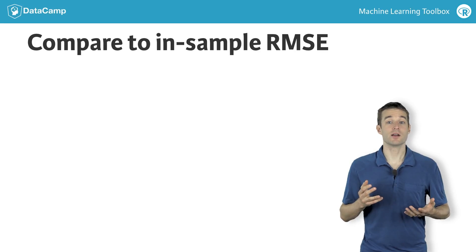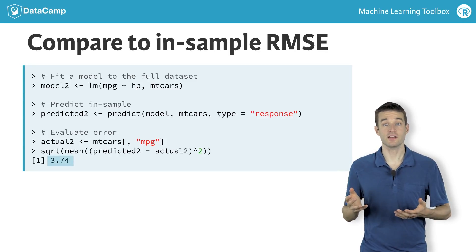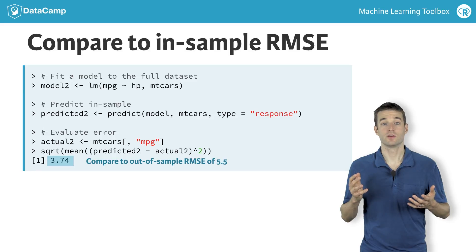Compared to in-sample RMSE from a model fit on the full dataset, our model is significantly worse. If we had used in-sample error, we would have fooled ourselves into thinking our model is much better than it actually is in reality.